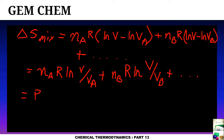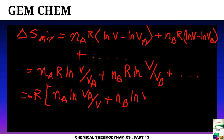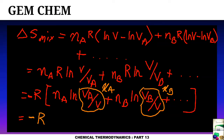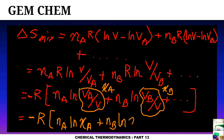Taking out minus R as a common factor, the V/V_A terms get inverted to V_A/V: ΔS_mix = −R·[n_A·ln(V_A/V) + n_B·ln(V_B/V) + ...]. Now, V_A/V gives us the mole fraction X_A, and V_B/V gives the mole fraction X_B (since for ideal gases at constant T and P, volume ratio equals mole fraction). So this becomes −R·[n_A·ln X_A + n_B·ln X_B + ...].